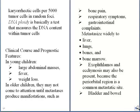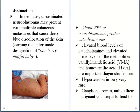Exophthalmos and ecchymosis may also be present because the periorbital region is a common metastatic site. Bladder and bowel dysfunction may also be present. In neonates, disseminated neuroblastoma may present with multiple cutaneous metastases that cause a deep blue discoloration of the skin, resulting in the appearance known as the 'blueberry muffin baby,' as seen in the picture.